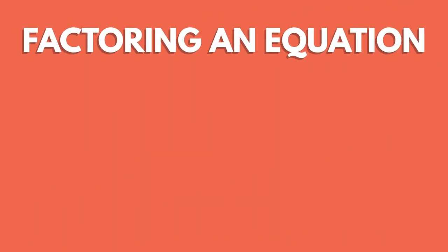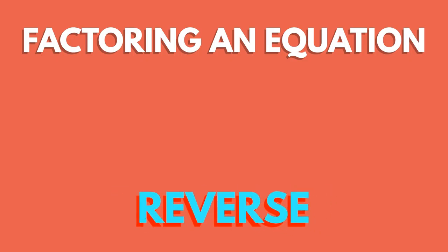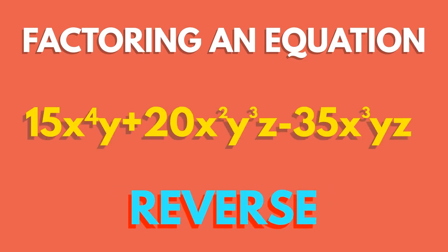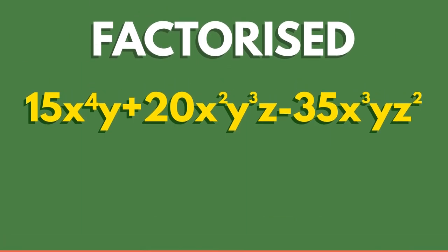Factoring an equation is the reverse. We need to put the brackets in. To do this, we need to take out the biggest number that goes into each term. Take each letter in turn and take out the highest power, for example x and x squared, that will go into every term. Factorised, it becomes like this.